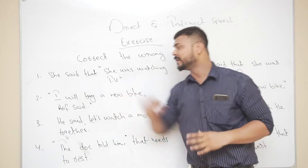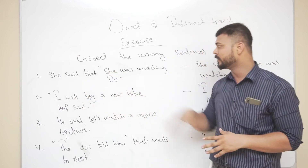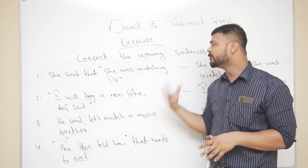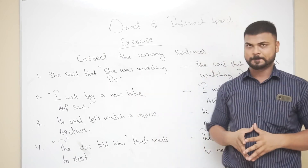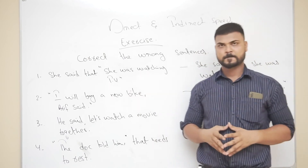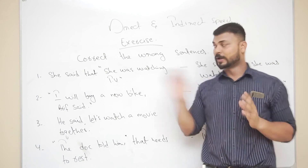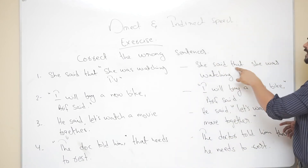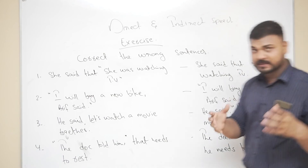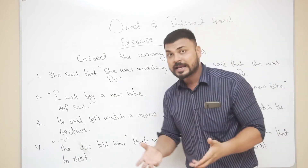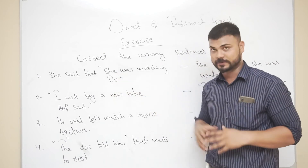The first sentence is: She said that she was watching TV. What is the mistake here? The answer: She said that she was watching TV. As it is an indirect speech, you are not going to use inverted commas.